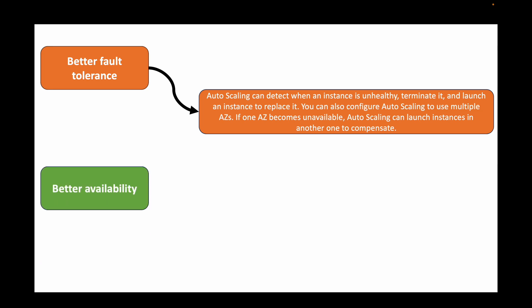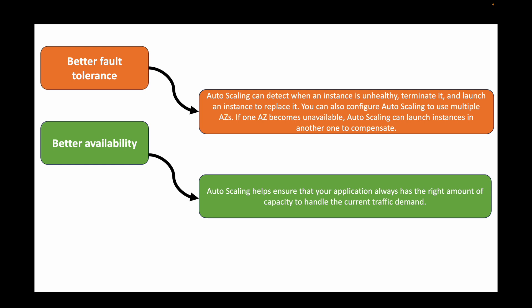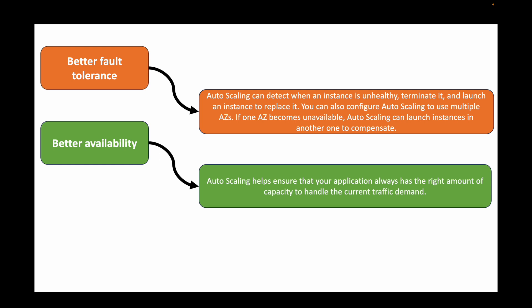The next benefit is better availability. Auto scaling groups help ensure your application always has the right amount of capacity — the right number of EC2 instances — to handle the traffic demand and the load on your application, so we get better availability.